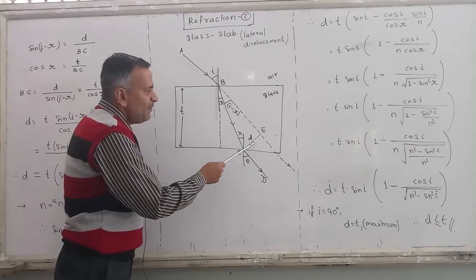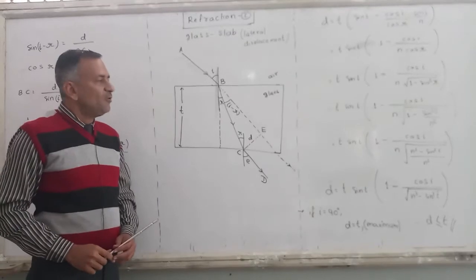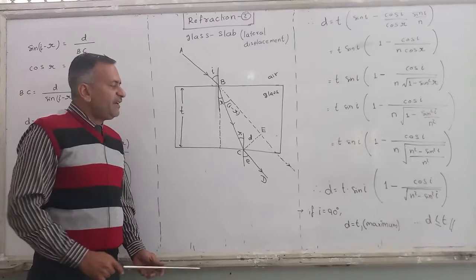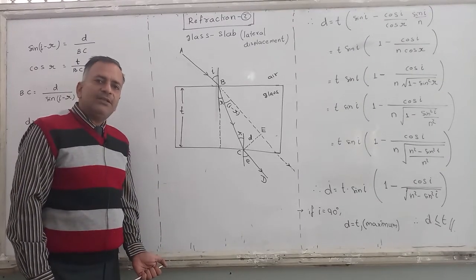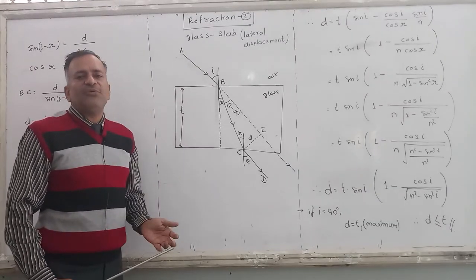D is the amount of lateral displacement. AB is incident ray, BC is refracted ray, CD is the emergent ray. Once you understand the diagram, then we can move to the derivation.